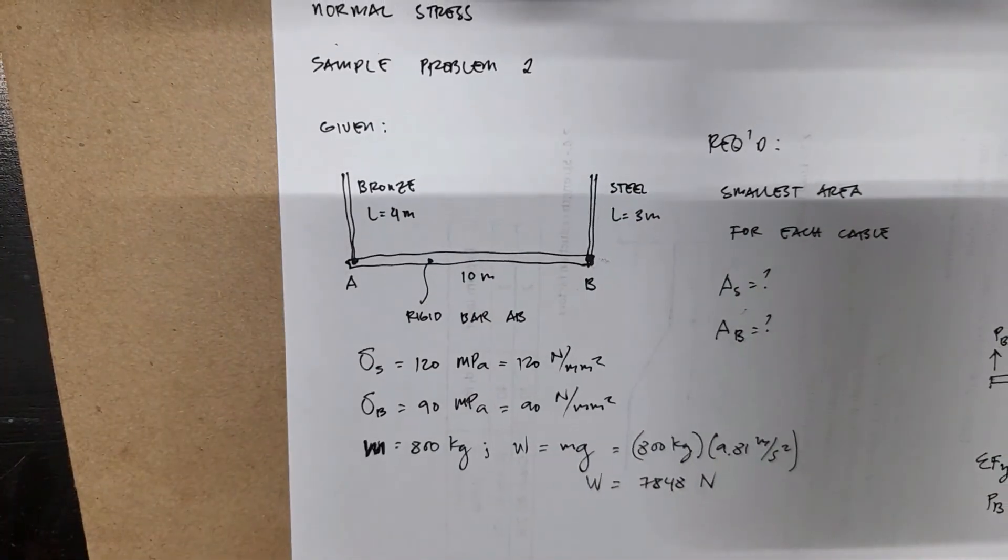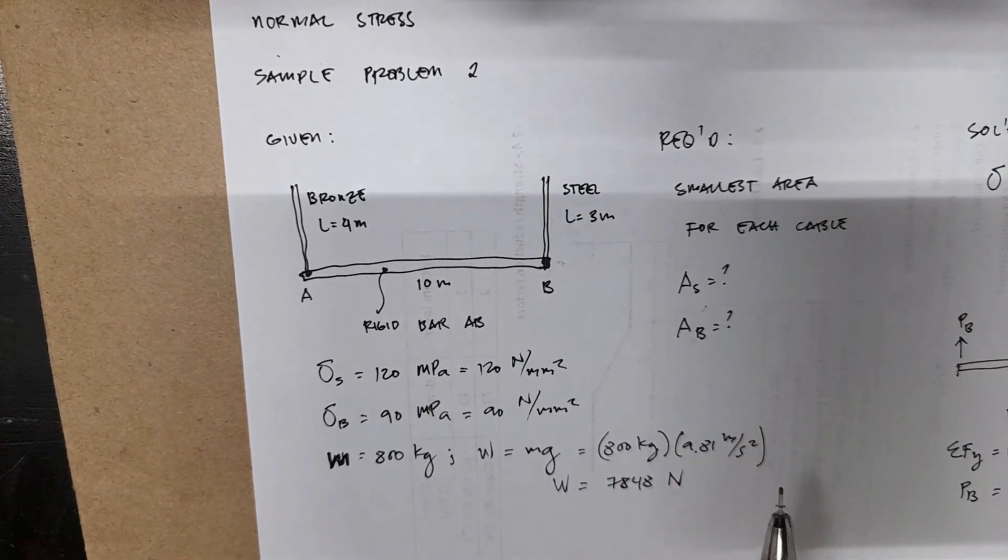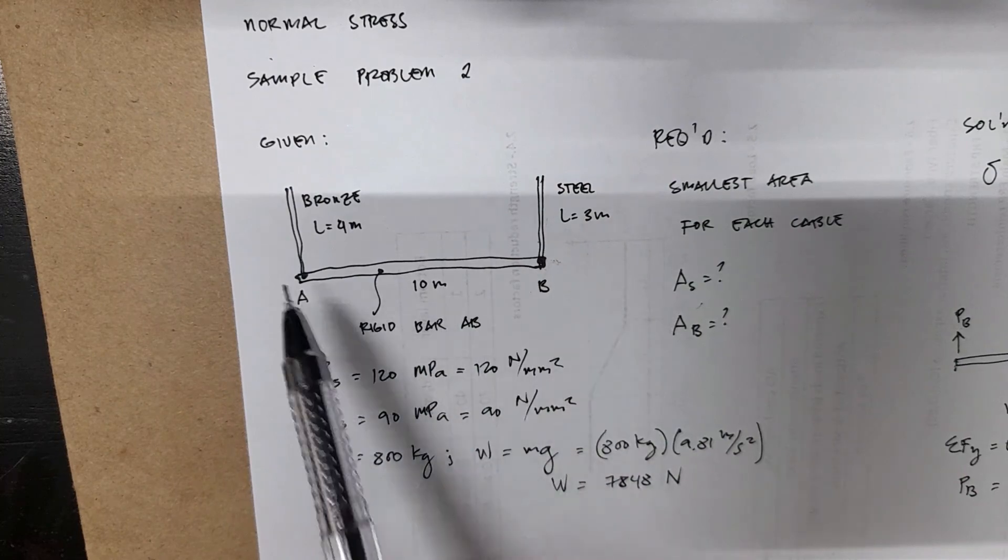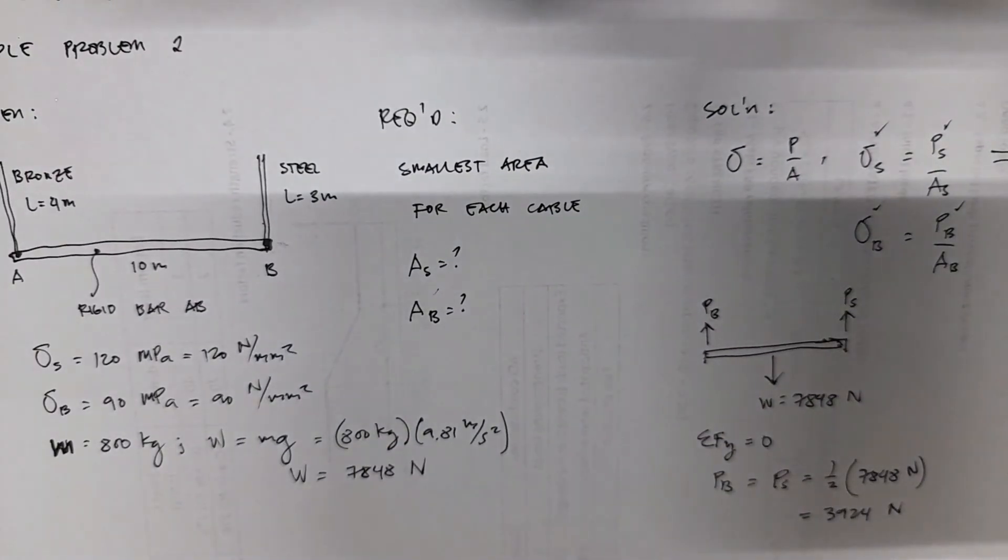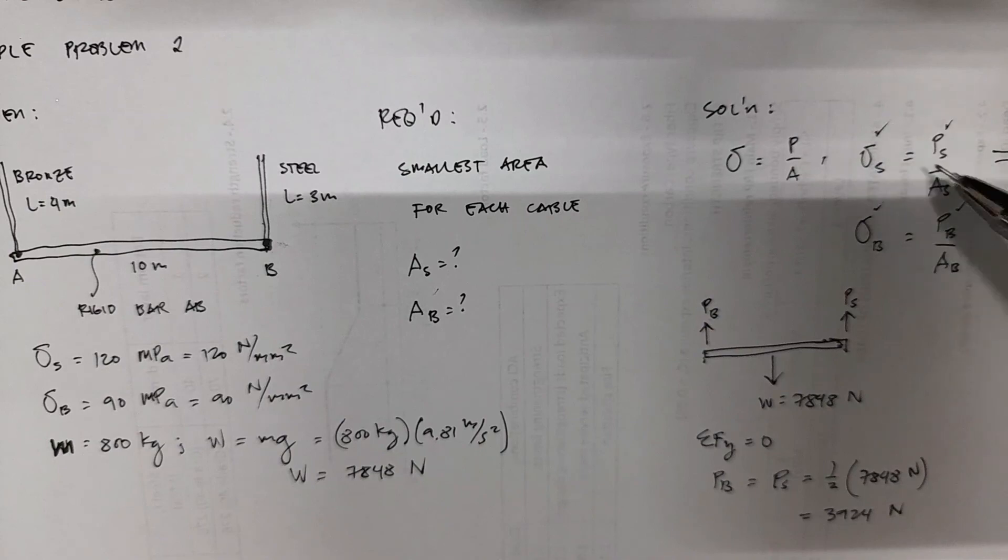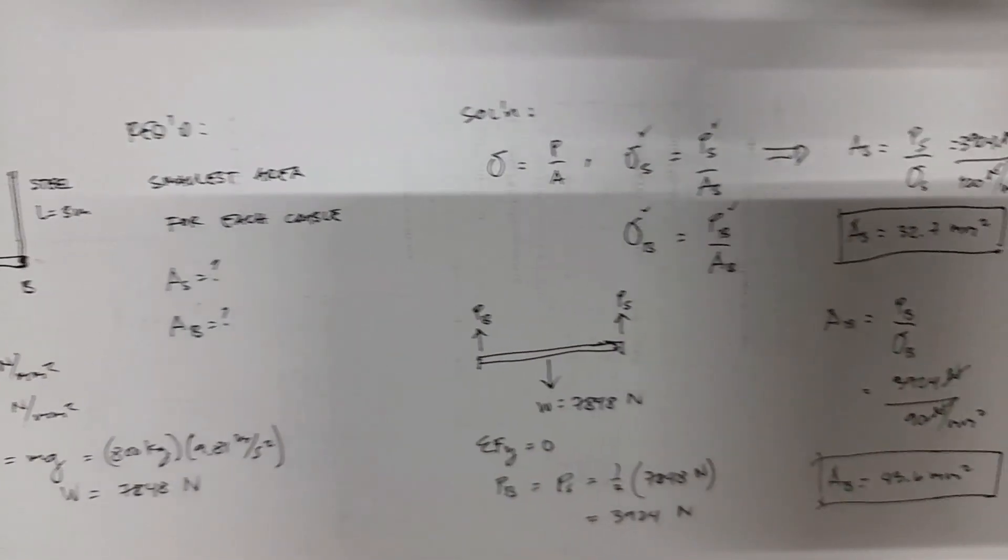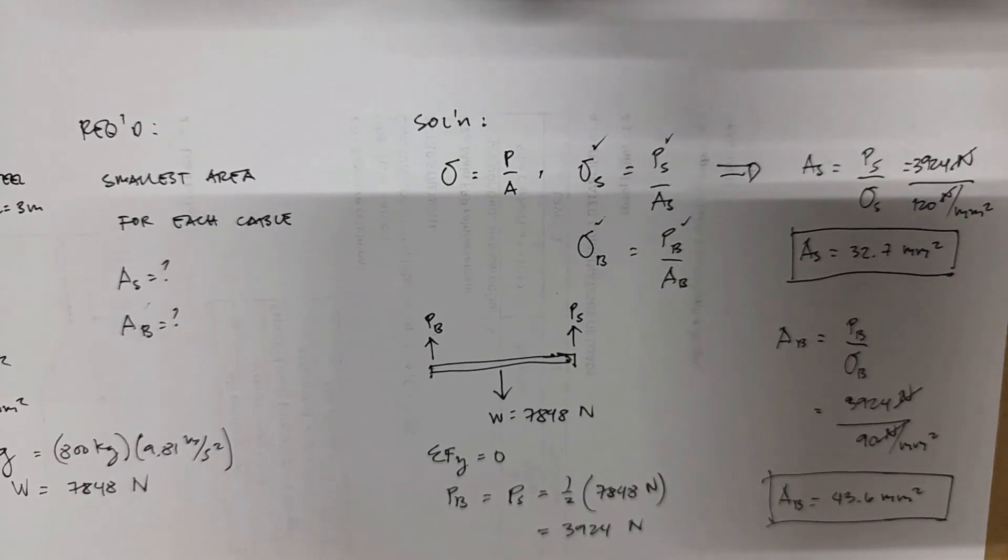So, back to our problem. This one is a smaller area, this one is a bigger cross-sectional area. So again, this is straightforward - just have to get the P because these are given, then you can solve for the required areas. That's it.